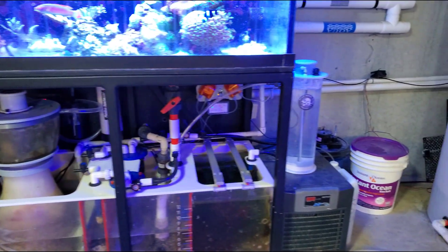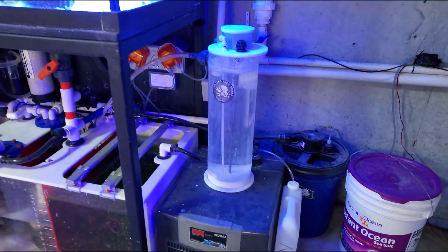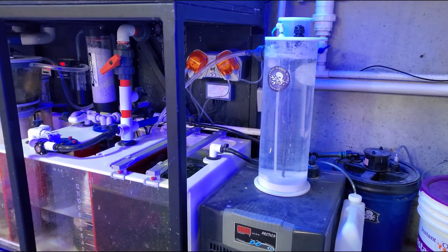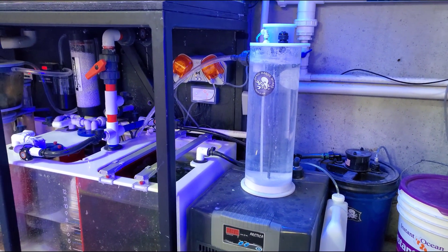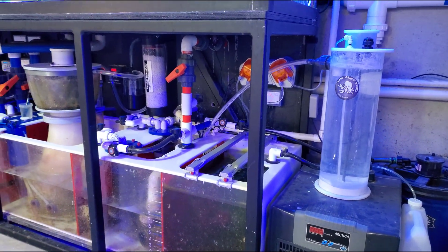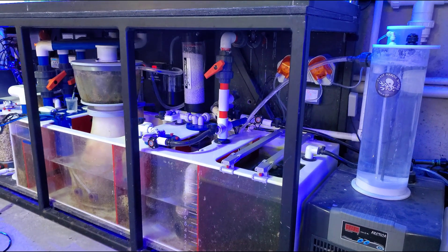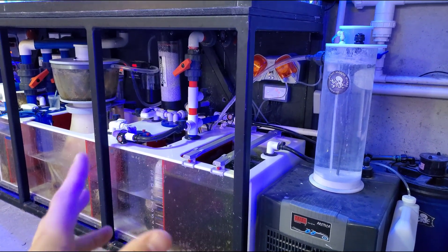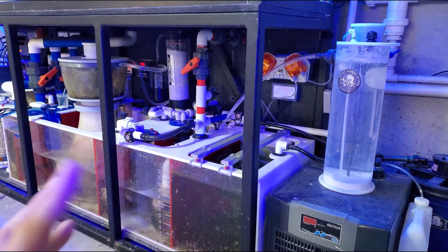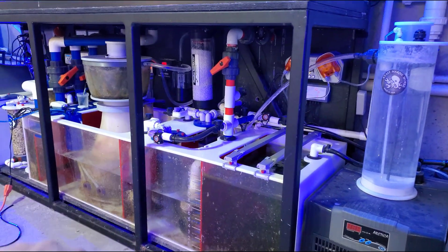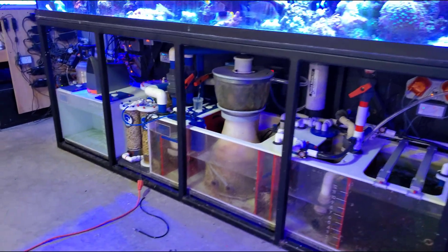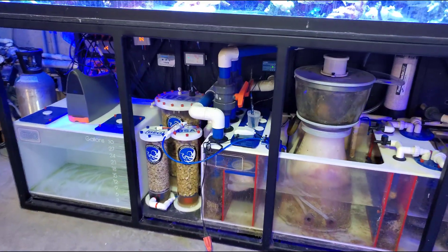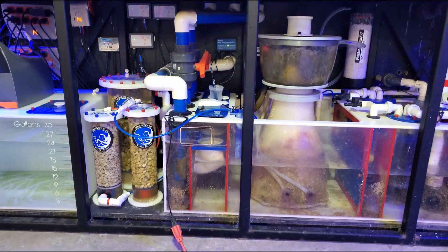Now understand I am dosing kalkwasser here, so I dose about 3,500 milliliters of kalk a day, which is a little under a gallon, and that dumps directly into the tank there. It disperses itself. I used to dump it into my refugium, but it just kind of left this film on the top of the refugium because there isn't a ton of flow.